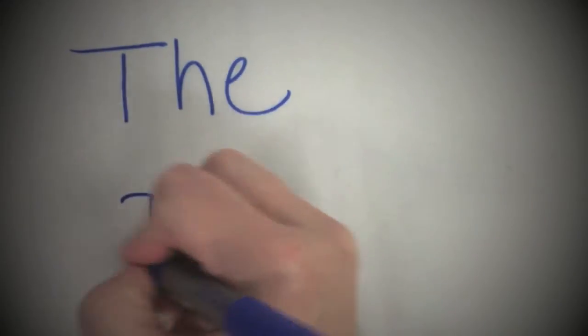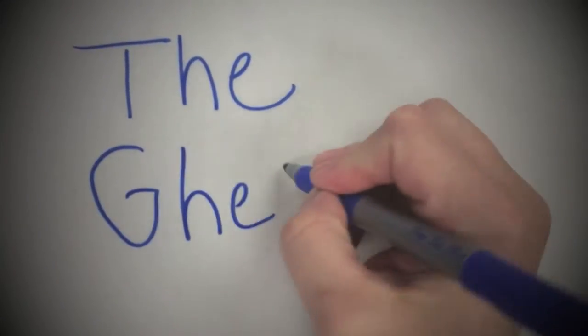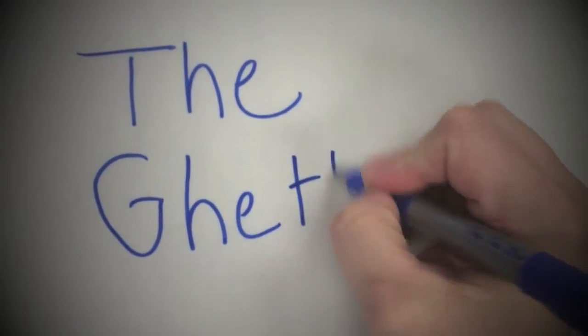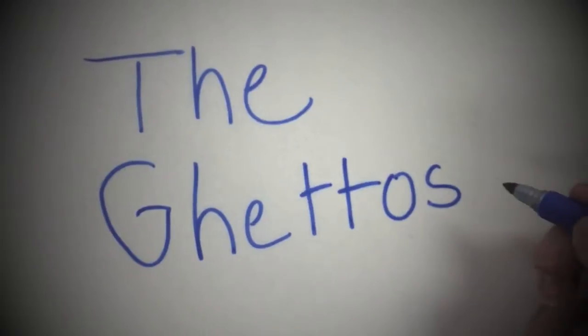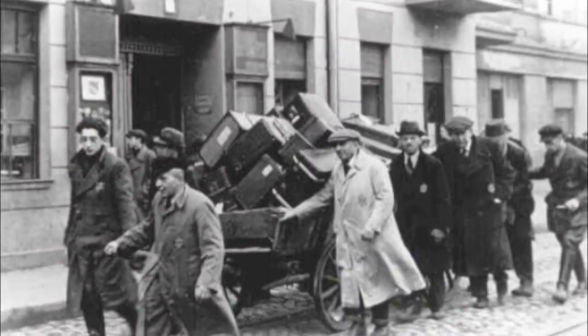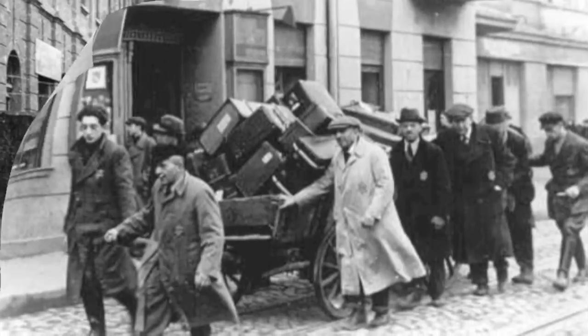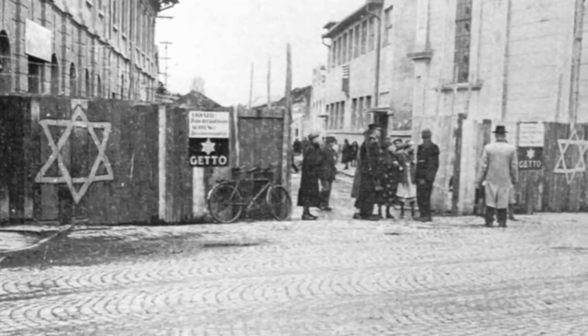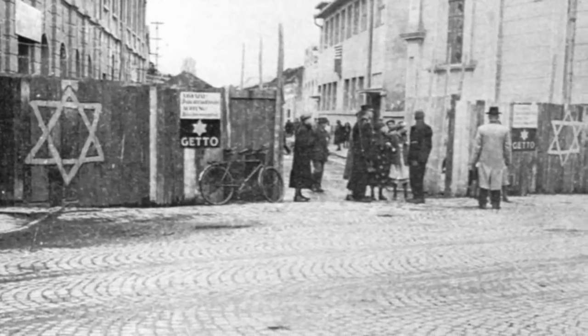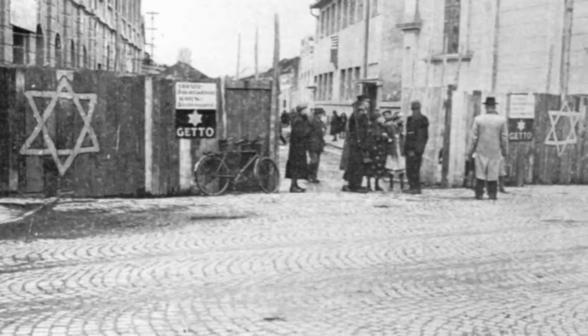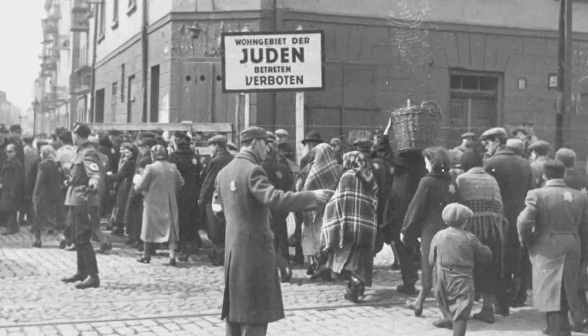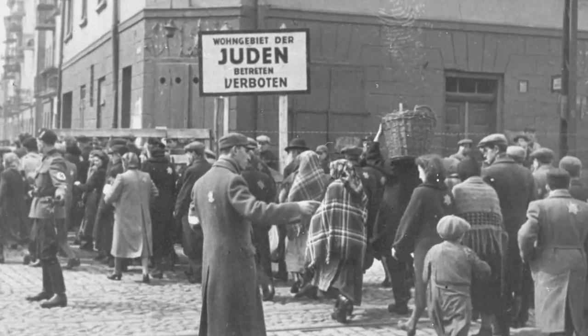As Germans began conquering countries in Eastern Europe, Jews were taken from their homes and forced to live in ghettos. The ghettos were overcrowded and the Jews were not given enough food to eat.